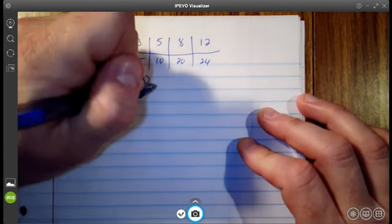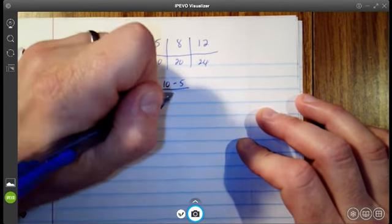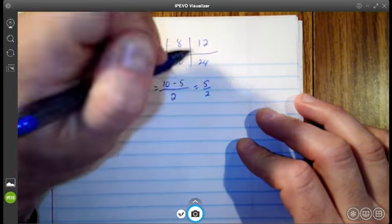mean I'm going to take k of five minus k of three over five minus three. Alright, and k of five is ten, and k of three is five, and five minus three is two, of course. So I get five halves.